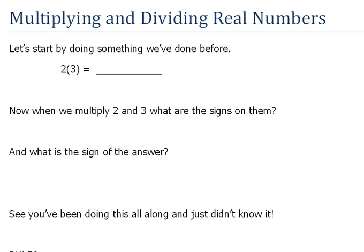Everybody has multiplied things like 2 times 3 before, so we all know that the answer there is 6. But let's kind of analyze what's going on here. When we multiply 2 and 3, what are the signs on those numbers? Well, the 2 is a positive number, and the 3 is a positive number. So these are both positive.